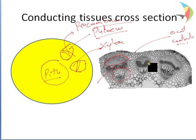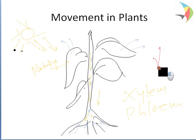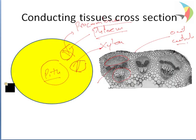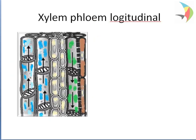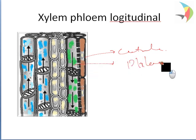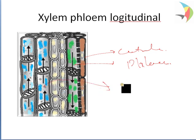The phloem part, the procambium part, and the xylem part, along with the outer cuticle, constitute the complete vascular system of a plant, which helps in the translocation of material up and down. In the longitudinal section, the phloem forms the outer part, and the xylem forms the inner part, translocating water, minerals, and food material from the roots to other parts.